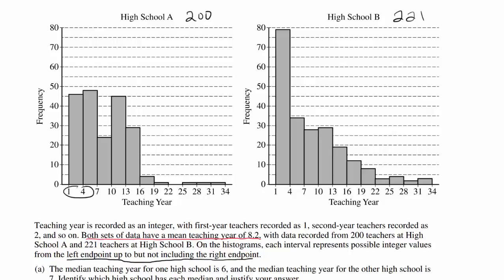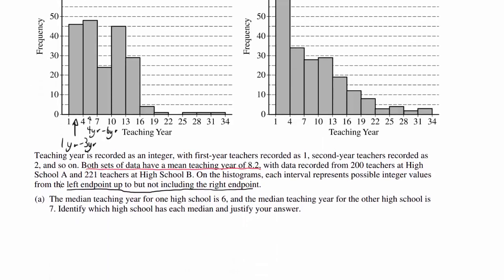So for this interval, you're looking at 1 year all the way to 3 years, not including 4. And for the next one, we have 4 years all the way up to 6 years of teaching. So we're looking at how many teachers responded 1 through 3, 4 through 6, 7 through 9, and so on. Part A.